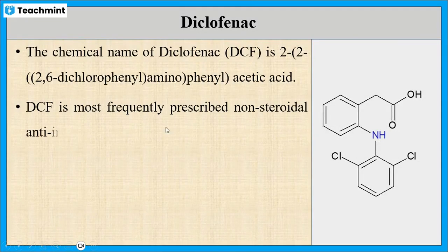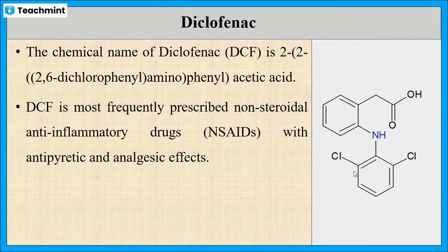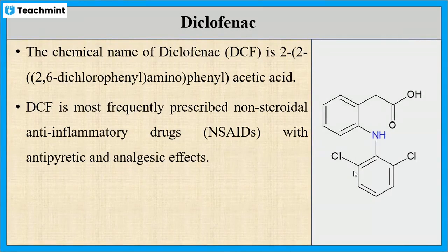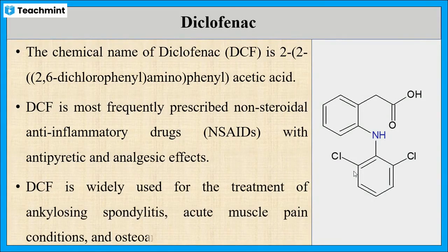Diclofenac is one of the pharmaceutical compounds. Its chemical name is 2-(2,6-dichlorophenyl)-aminophenyl-acetic acid. It is the most frequently recommended non-steroidal anti-inflammatory drug, having antipyretic and analgesic properties. It is widely used for the treatment of acute muscle pain, arthritis like ankylosing spondylitis, etc.